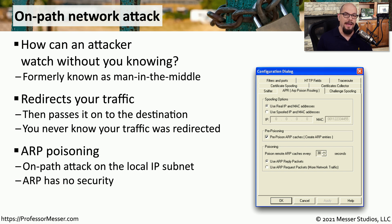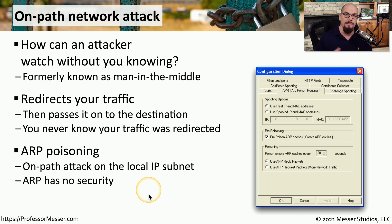A common on-path attack on a local IP subnet is ARP poisoning — address resolution protocol poisoning. ARP as a protocol has no security associated with it. Devices receive and modify ARP tables without any authentication or encryption, which allows an attacker to send ARPs to any device on the local subnet, and those devices will interpret them as if coming from a legitimate source.